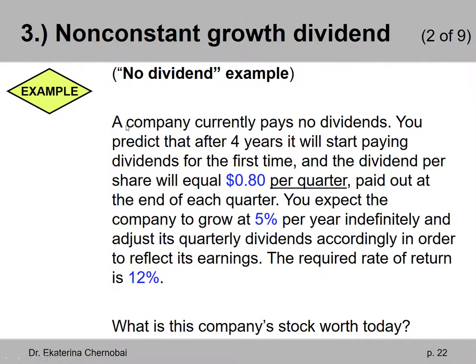In this example, we have a company that is currently paying no dividends. You predict that after four years, it will start paying dividends for the first time, and the dividend per share will equal $0.80 per quarter paid out at the end of each quarter.